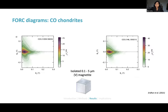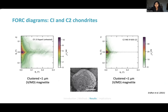For the CO chondrites, I only measured two, and they both show a very clear vortex state FORC signal of isolated, smaller magnetite grains. The CI and C2 chondrites, which are very aqueously altered, show a more triangular shaped signal spread out and close to the y-axis — typically associated with clustered submicron magnetite grains that form framboids, as also seen in SEM images.